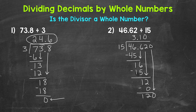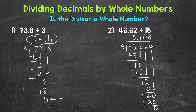Let's bring this 0 down and continue the problem. Now we have 120. Back to divide: 120 divided by 15 — how many whole groups of 15 in 120? That's 8, which hits 120 exactly. Multiply: 8 times 15 is 120. Subtract: 120 minus 120 is 0. We now have that clean cut 0 and we are done. Our final answer is 3 and 108 thousandths.